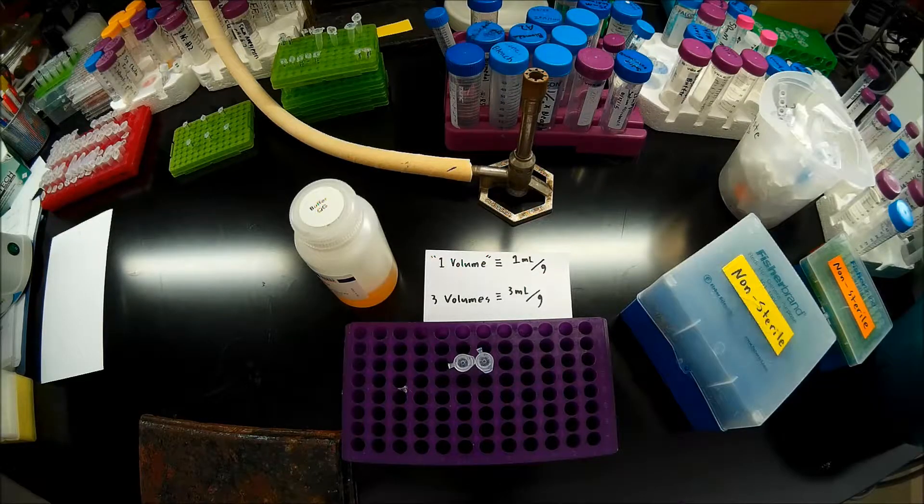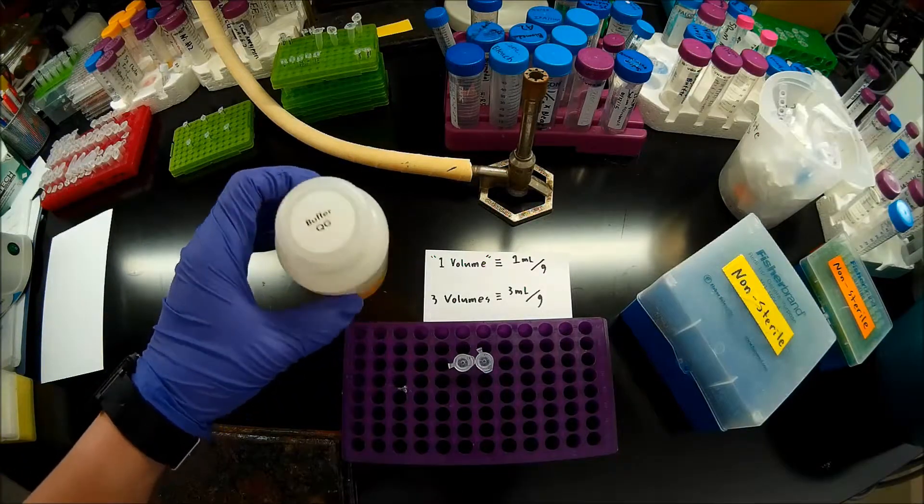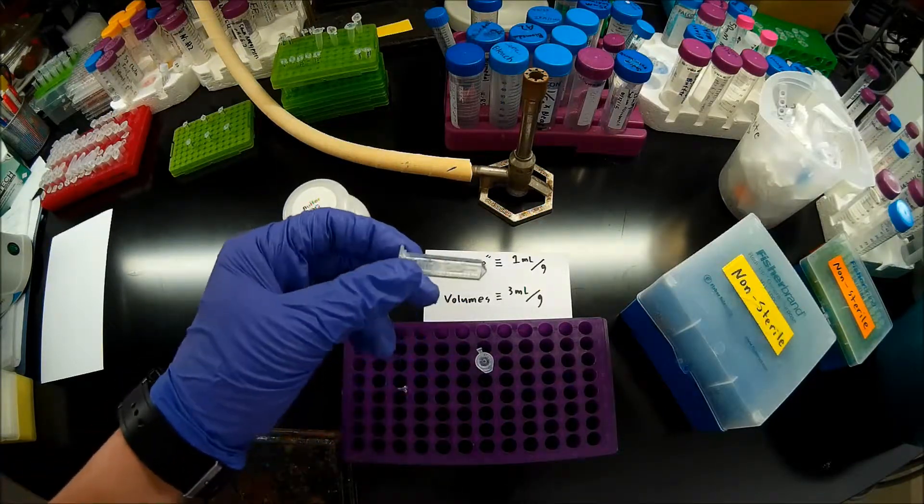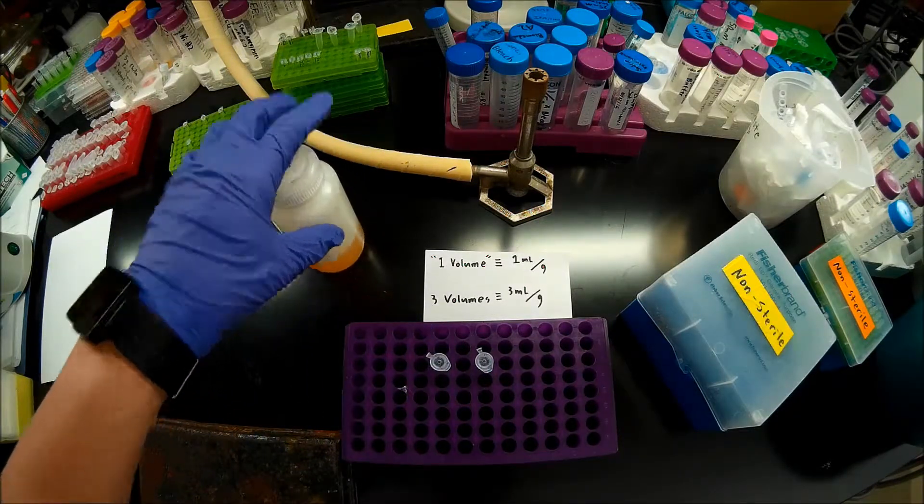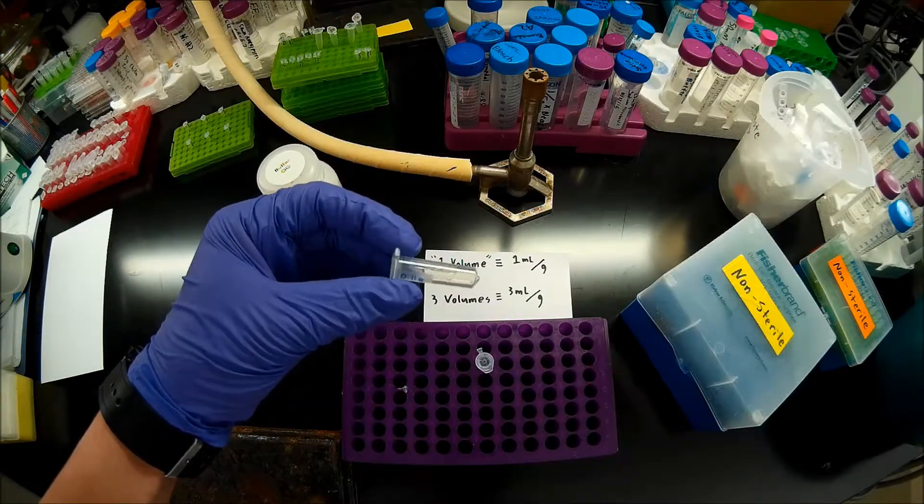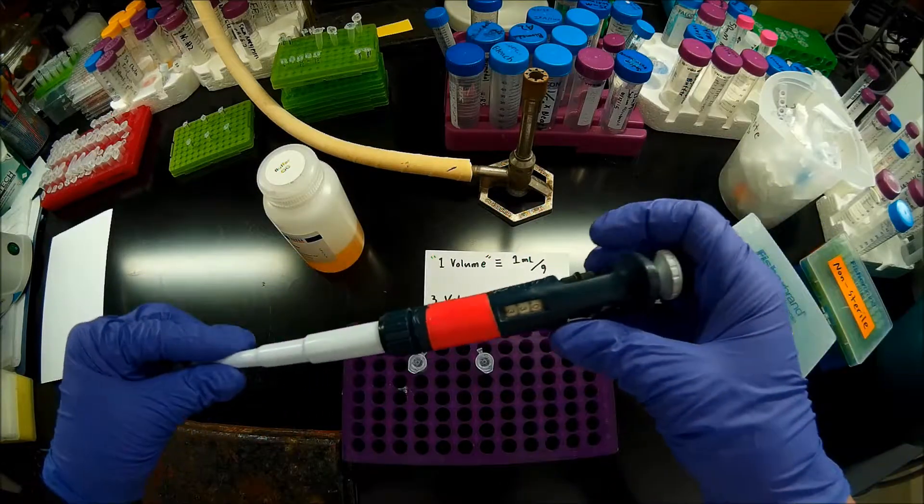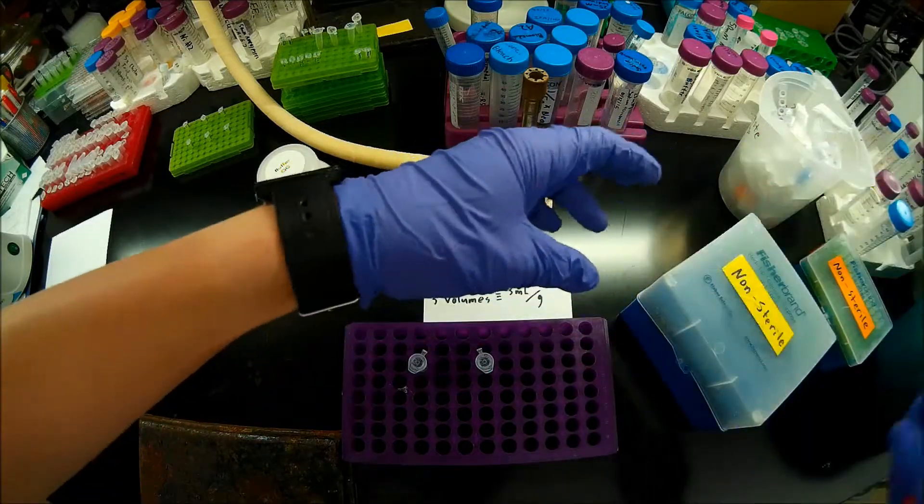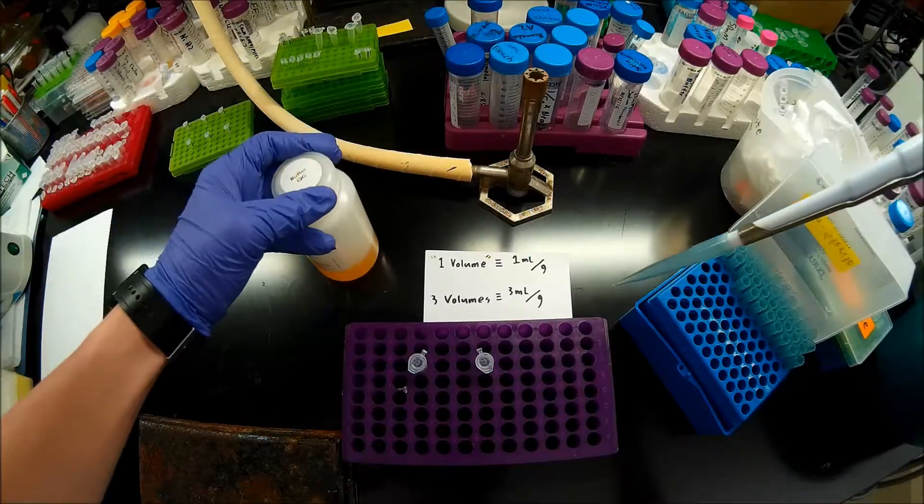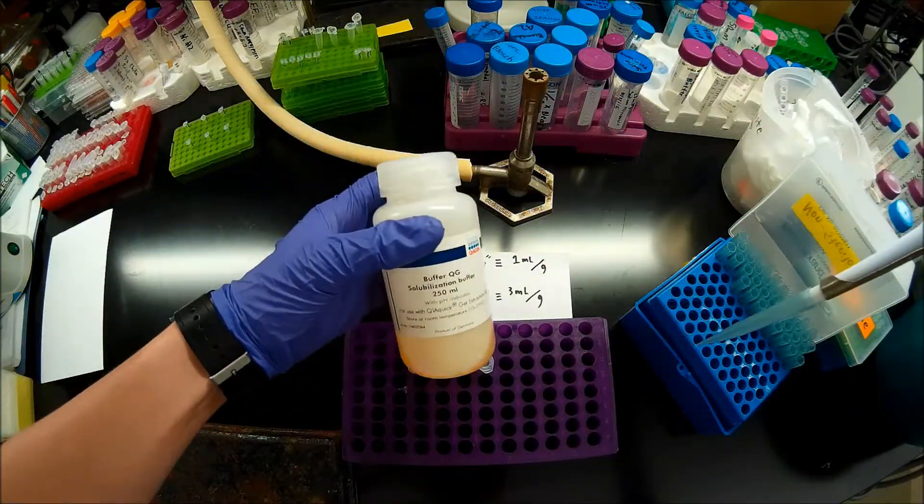So we're going to add the agarose slabs so that we can get the DNA out. So we're going to do that by adding QG buffer to them. For this procedure, we add three volumes of QG buffer to our agarose slabs. So what we mean by a volume, one volume when we say that, that's equal to one mil per gram. So we have 0.11 grams of agarose slab in here. So we're going to add 0.33 mils. So I'm going to take my P1000 set to 330 microliters. And I'm going to pipette that into the first one. Note that I'm not working sterile here because we're going to be doing a cleanup on these later anyways. So again, this is a QG buffer.